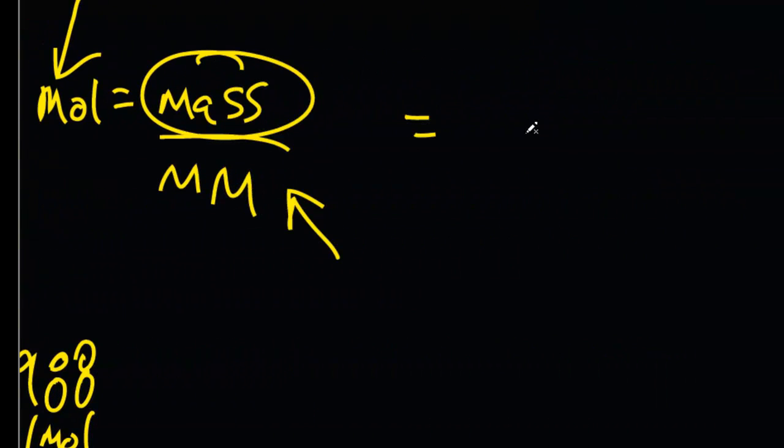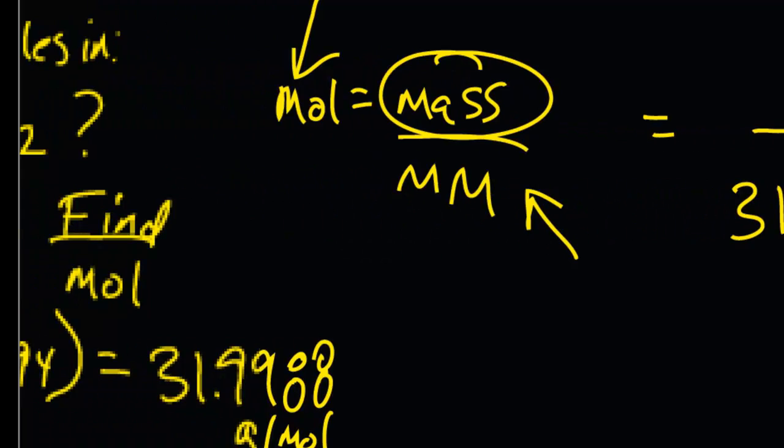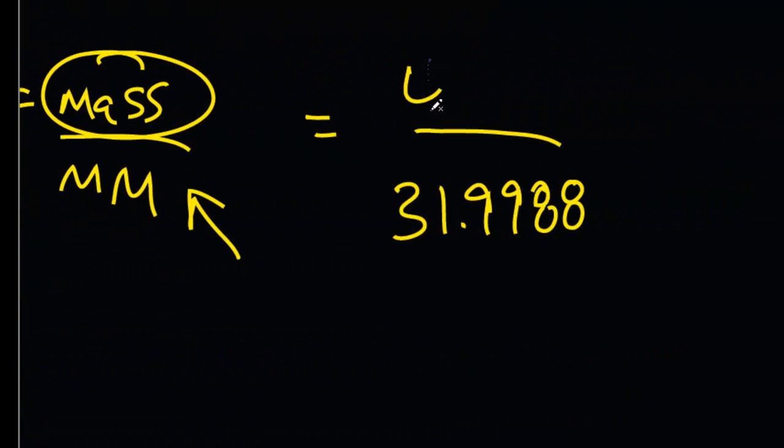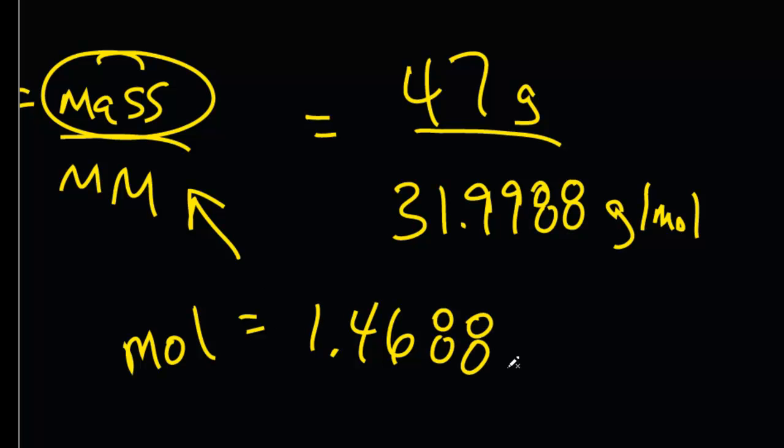So if we have 31.9988 for our molar mass, and how many grams do we have? 47. I'll put the units in there just to be consistent. What is our number of moles? Well, just divide the two. 47 divided by 31.9988 and I get 1.468805 and so on.